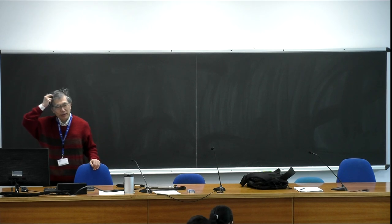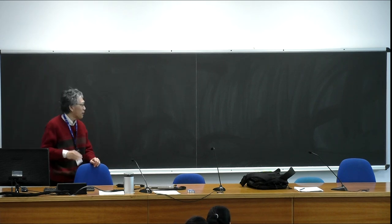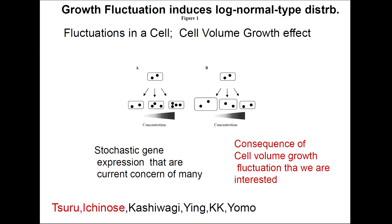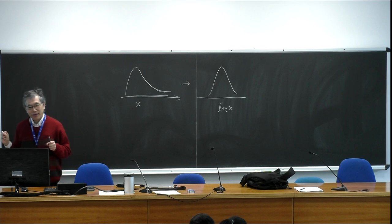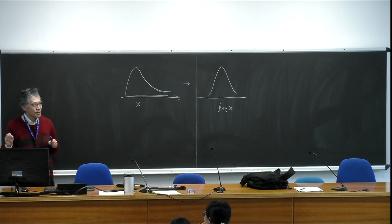Yesterday I talked about this kind of ZIP flow, this parallel in the abundances, and then a log-normal type distribution across cells. Here is a simple origin of a log-normal type distribution. This distribution of some abundances shows this kind of long tail, and then log x is close to Gaussian.